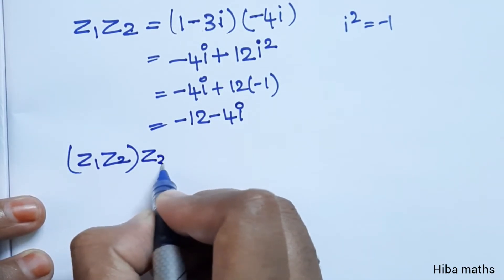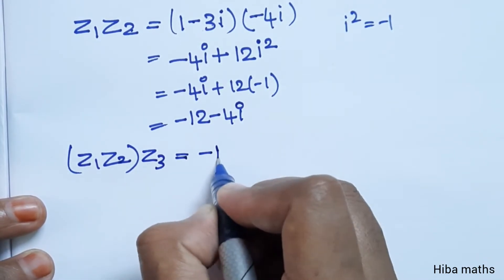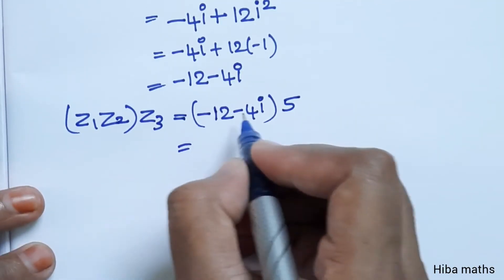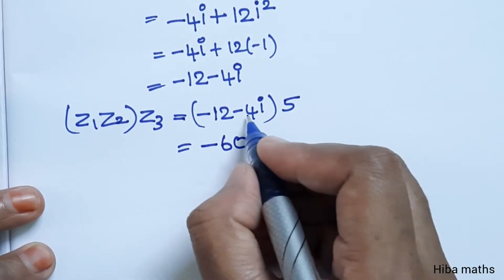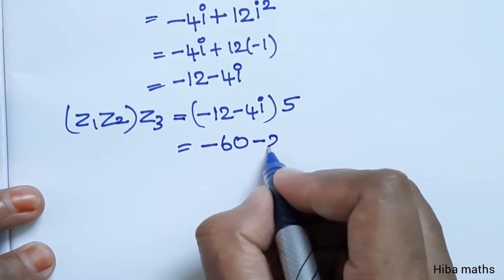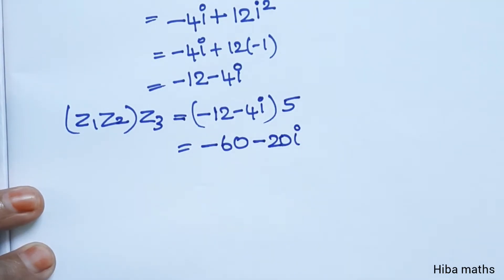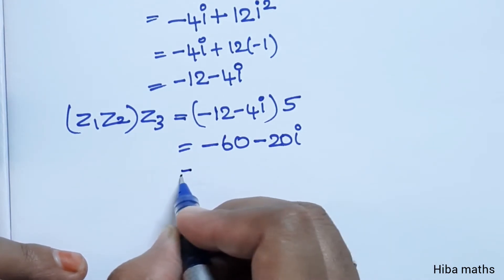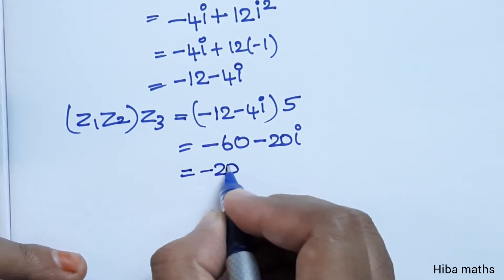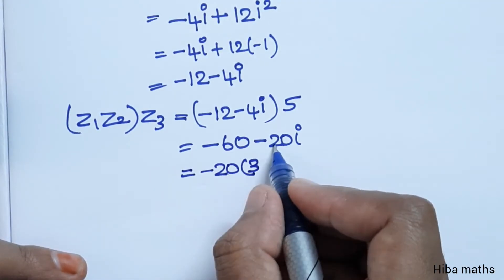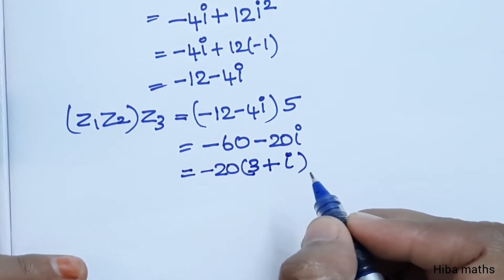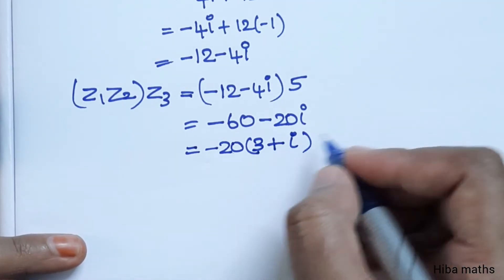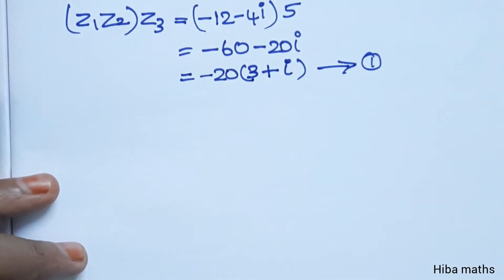Now multiply z1·z2 by z3. So minus 12 minus 4i multiplied by z3 value 5. That gives minus 60 minus 20i. Taking minus 20 common: minus 20 into 3 plus i. This is our first equation.